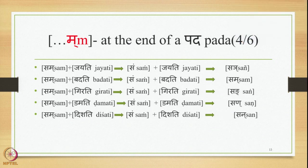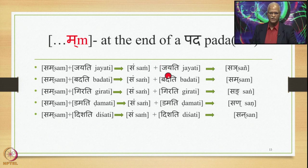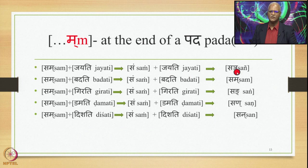Sam plus Jayati: 8.3.23 gives Sam Jayati (with Anuswara). Then 8.4.59 substitutes the Anuswara by the nasal Parasavarana of J, giving Sain Jayati optionally. The other optional output is Sam Jayati.